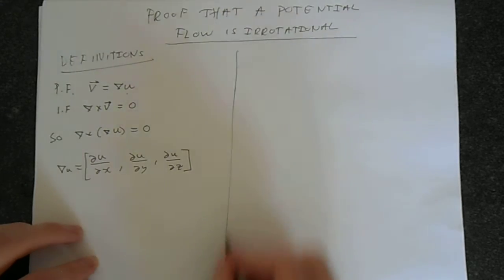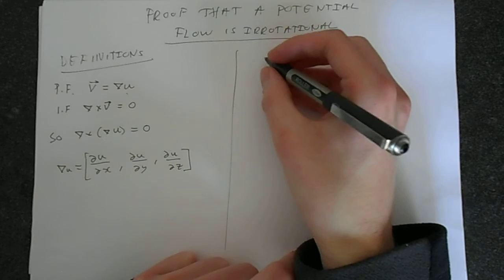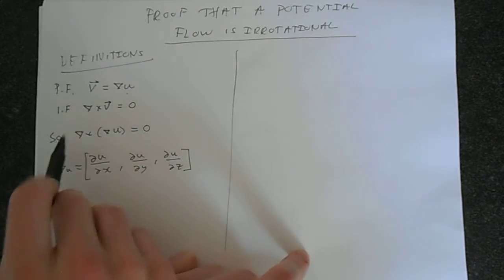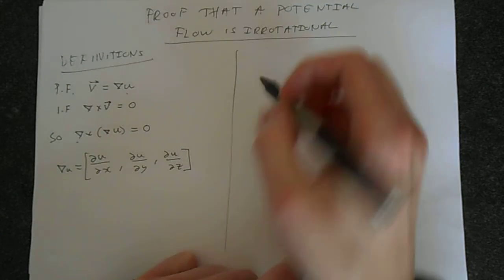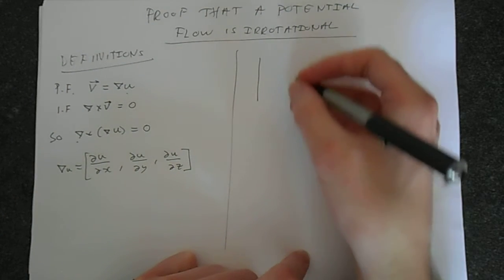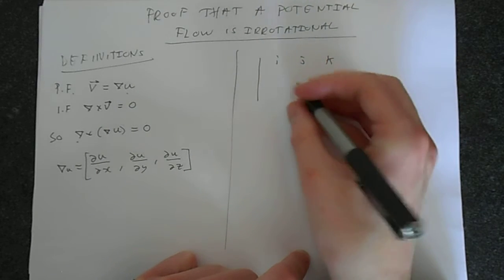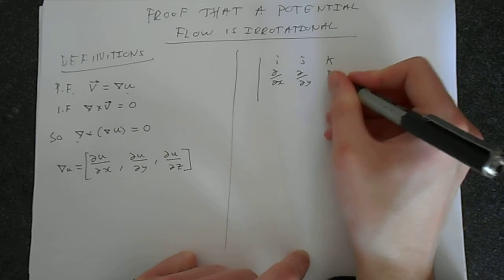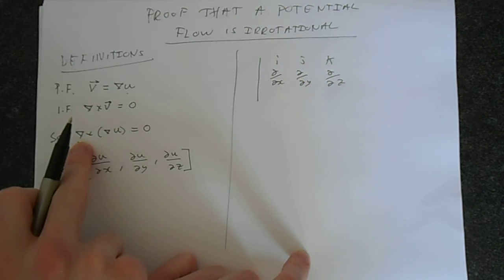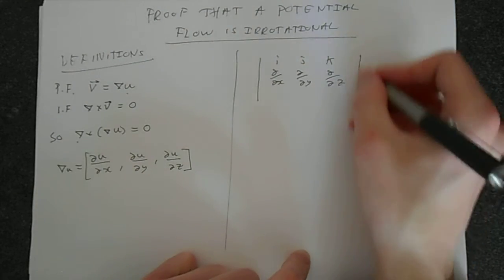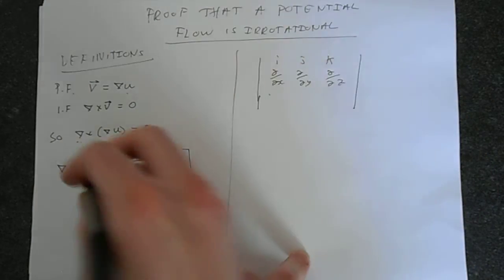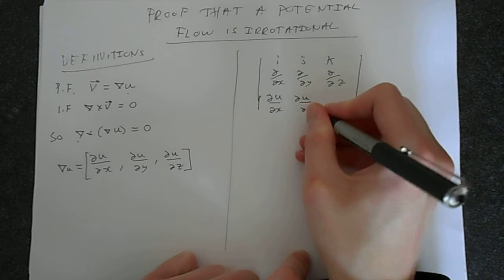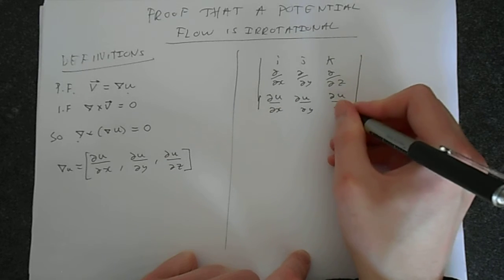So let's actually do the proof across here. So we've got this cross product. So we're doing this cross this. So obviously, this is going to be i, j, k, and we've got delta by delta x, delta by delta y, delta by delta z. This is simply this del is broken down into those components. And here we've got this substitute in here, delta u delta x, delta u delta y, delta u delta z.